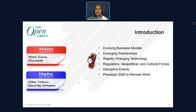Looking at where we are today in terms of context, we really are facing a situation with evolving business models — really looking for opportunities where the landscape affords new creative opportunities to provide value to end customers or businesses. We have emerging partnerships as well, some of which involve working with competitors. We also have rapidly changing technology where we have cloud, microservices, serverless — a lot of these emerging technologies are shifting us towards an increasingly digital direction.